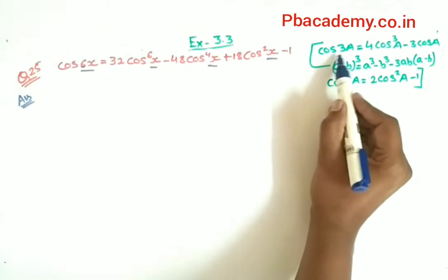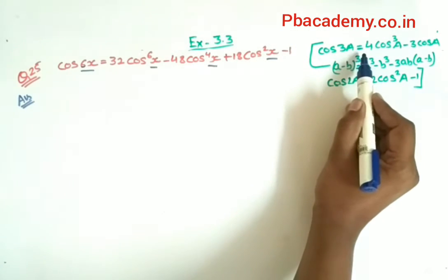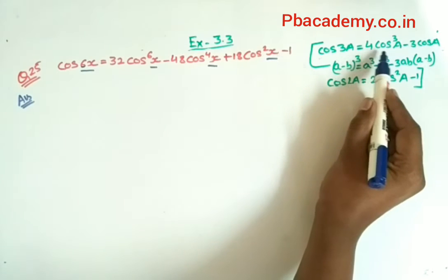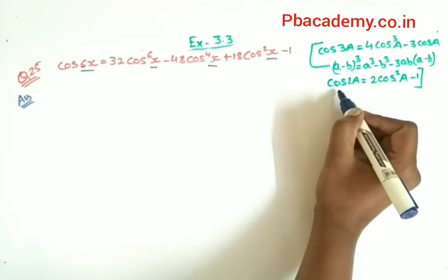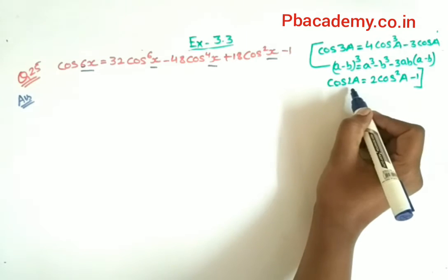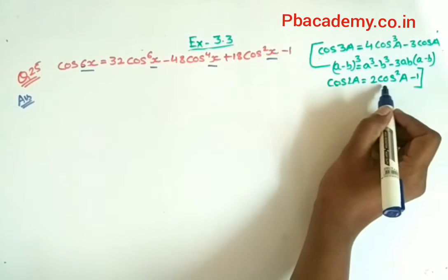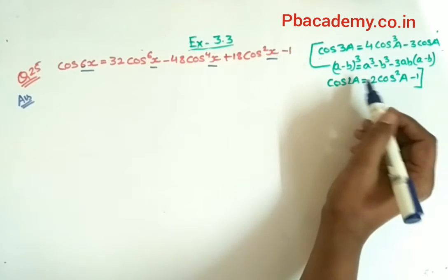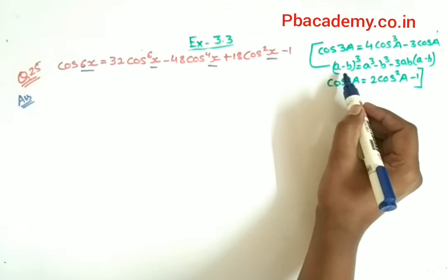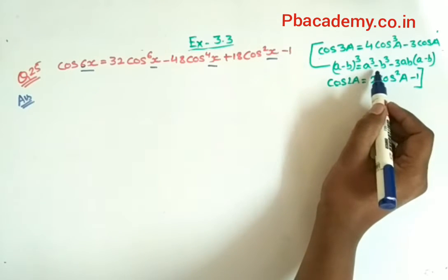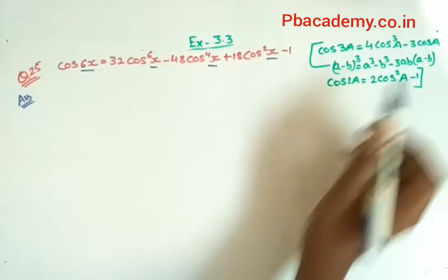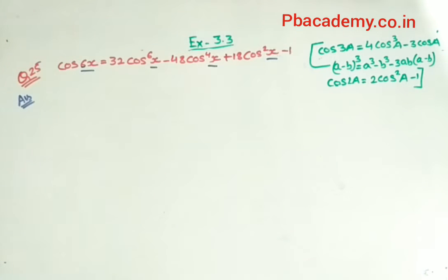The identities we will use are: first, cos 3a = 4 cos³a − 3 cos a; second, cos 2a = 2 cos²a − 1; and for the algebraic identity we will use (a − b)³ = a³ − b³ − 3ab(a − b). So let us solve this question.